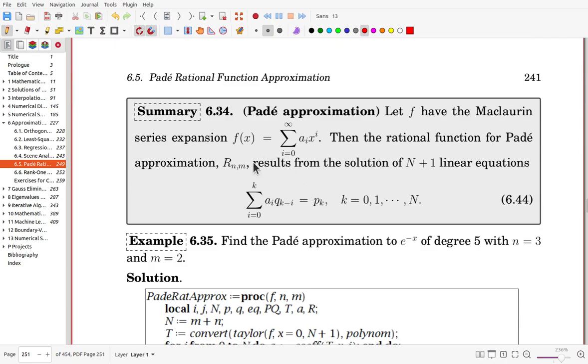In this summary, that is summarized. Now, Padé approximation, f has a Maclaurin series given in this form. Then the rational function for Padé approximation results from the solution of the n plus 1 linear equations. So, this n plus 1 linear equations for n plus 1 unknowns, you can get the solution.